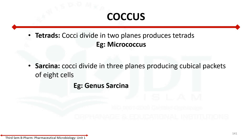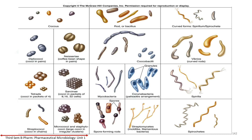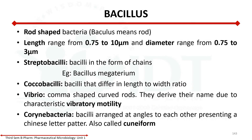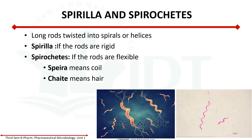Spirochetes have a spiral structure. The spirals can be rigid, as in spirillum, or they can be flexible and thin, as in spirochetes such as Leptospira.